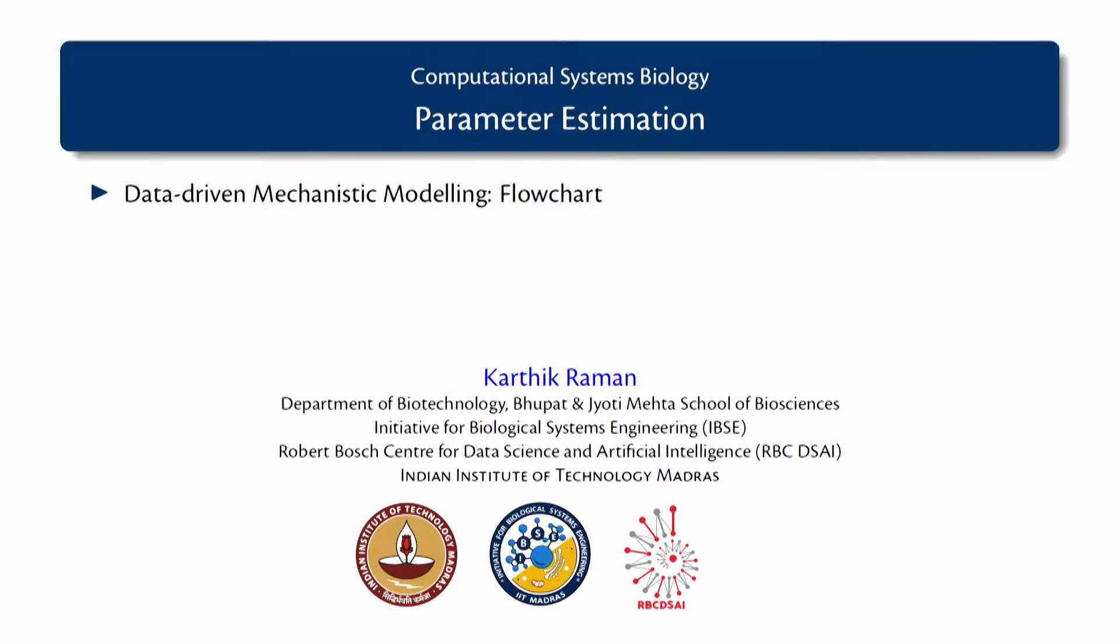In this video we will look at how we carry out data-driven mechanistic modeling. Given some data on time course of various species involved in a biochemical reaction network, how do you build a mechanistic model maybe based on mass action, Michaelis-Menten or Hill equations to accurately predict the time course of various species involved and understand what is happening in the biological network.